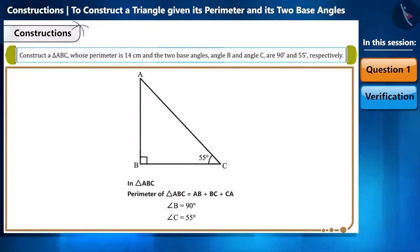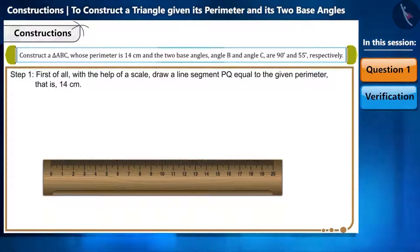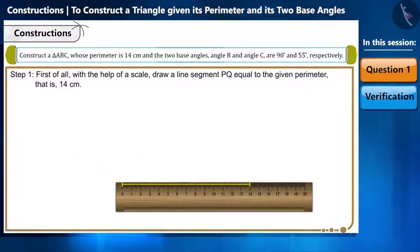According to the given information, we will construct the triangle by following these steps. So let's start. Step 1: First of all, with the help of a scale, draw a line segment PQ equal to the given perimeter, that is, 14 cm.